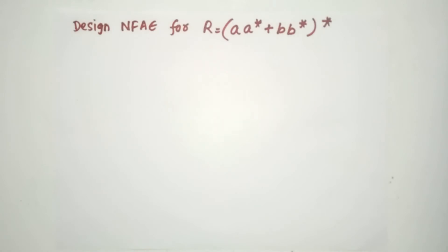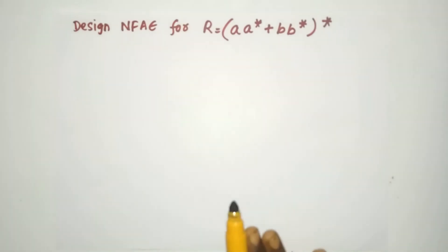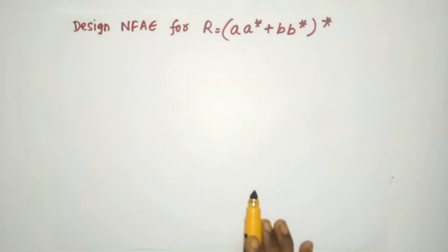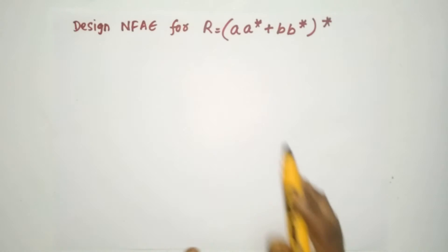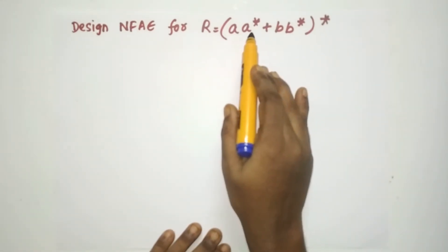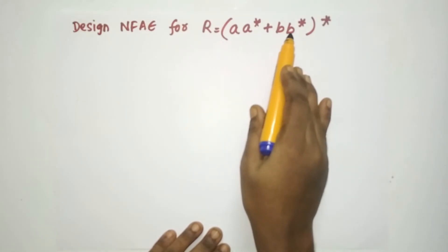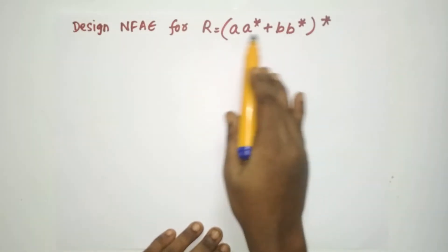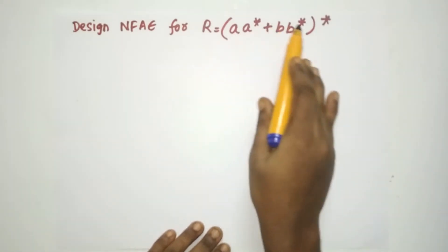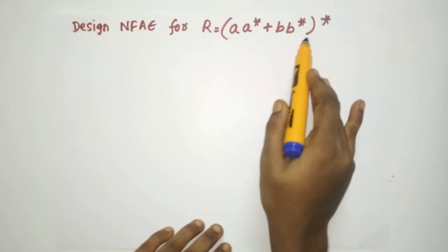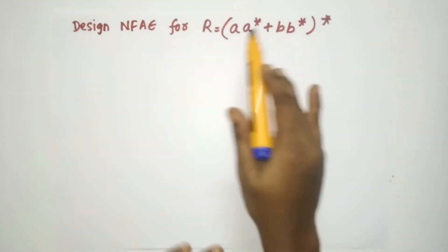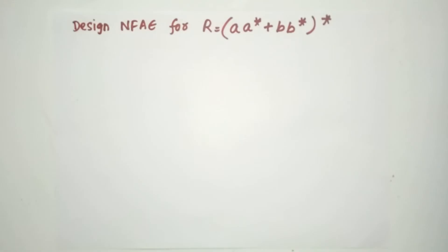While constructing the NFA Epsilon for the union operator, you have to decide which part goes on the top and which goes on the bottom. We are going to draw A·A* on the top and B·B* on the bottom, then apply union to those two parts, and finally apply the closure to the entire expression. This is our plan.